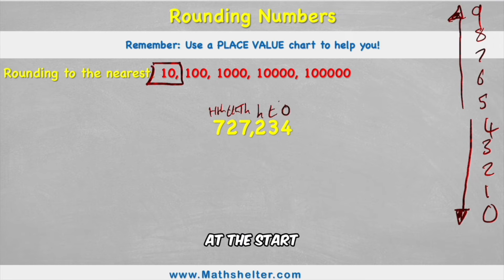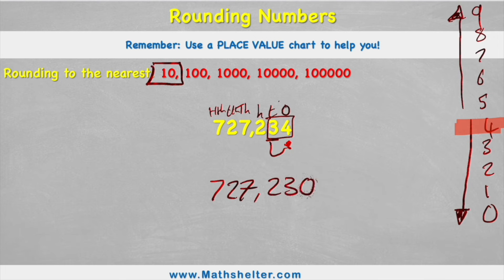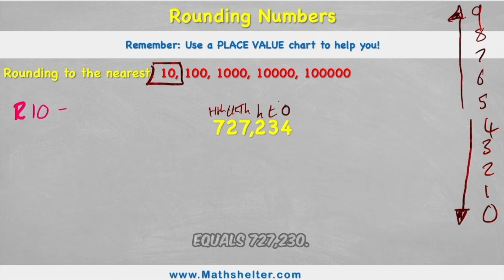So now I can look back at the start of my question which was rounding this to the nearest 10. Look in my tens column is a 3. Look next door I can see a 4. Well 4 is part of my rounding down to the floor which means I'm going to round my 34 down to a 30. So my final answer would be 727,230 instead of 34. Okay so rounding to the nearest 10 equals 727,230.